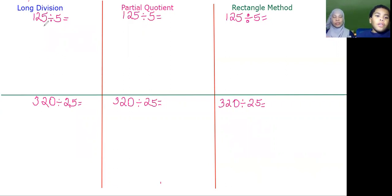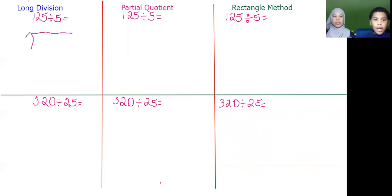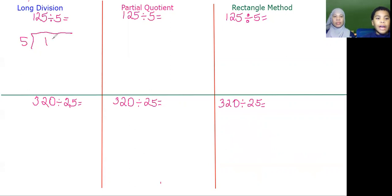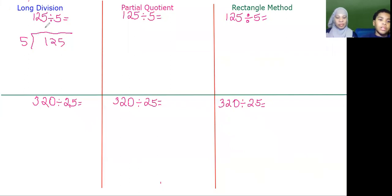Okay, so for this long division, this is the symbol. Then we put — so this is the divisor, which is five. The question is 125 divided by five. So you put five right here, then you put 125 inside. So what you do, you see if five can go into one. Five can't go into one, so you put a zero on top. That represents how many times five can go into one.